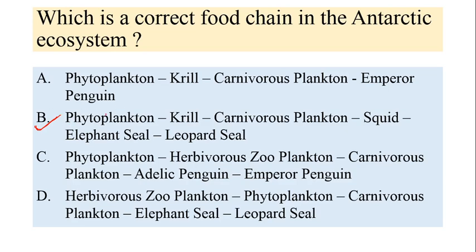Always the smaller animal gets eaten by the larger one. So if you know about the size of animals, you can think about this food chain. Pay some focus on the food chains given in your books. You can learn about different food chains — aquatic, terrestrial, grassland, or forest. Many food chains are available on the internet as well.